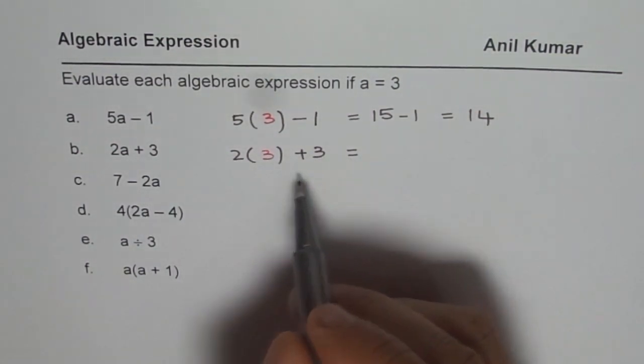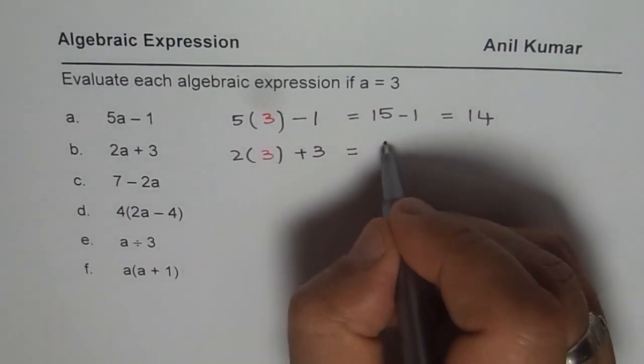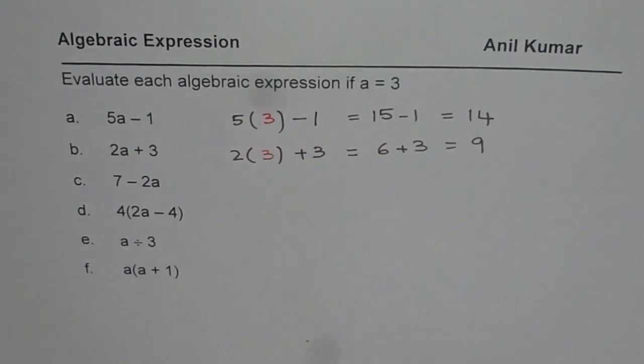Once I substitute a equals 3, we need to apply the order of operations. First, you multiply. 2 times 3 is 6. 6 plus 3 equals 9. So the value of this expression is 9.